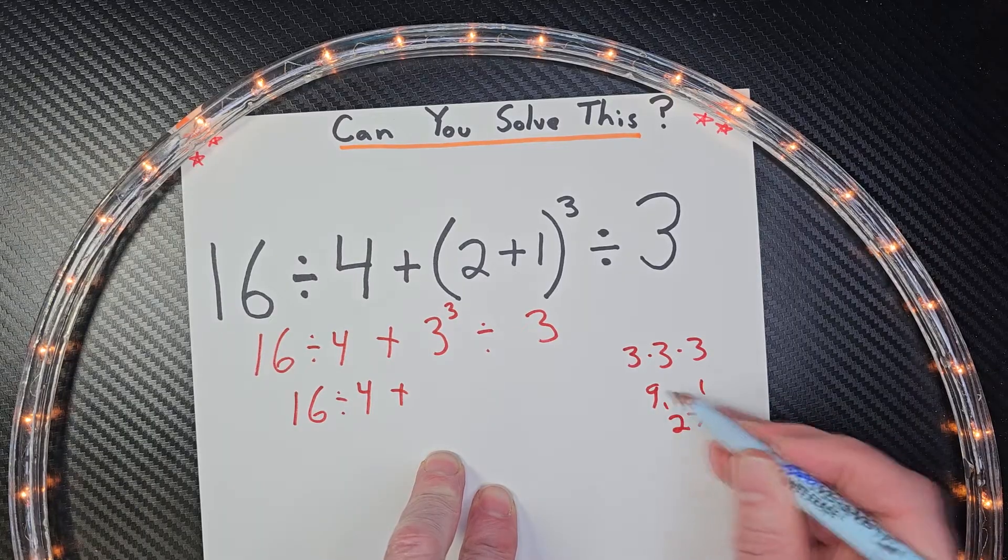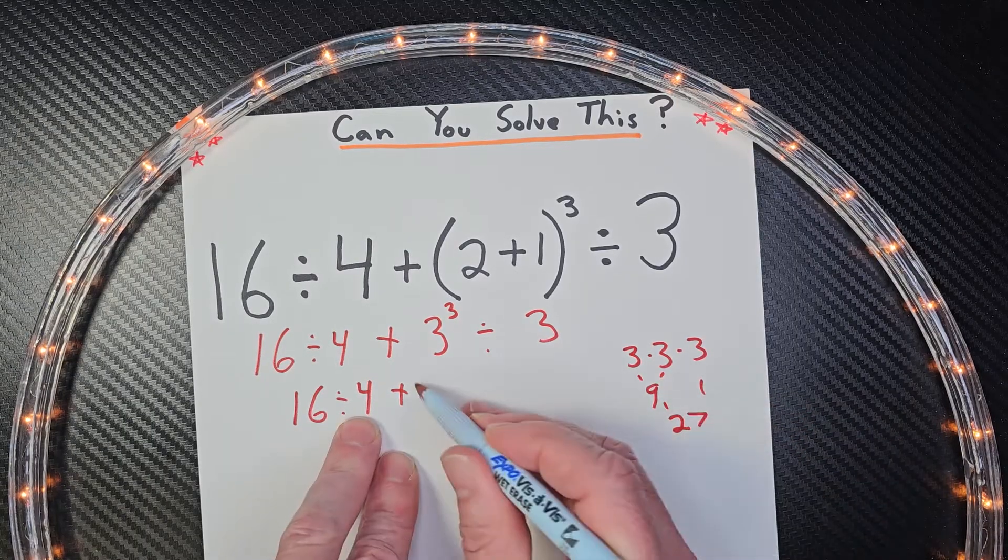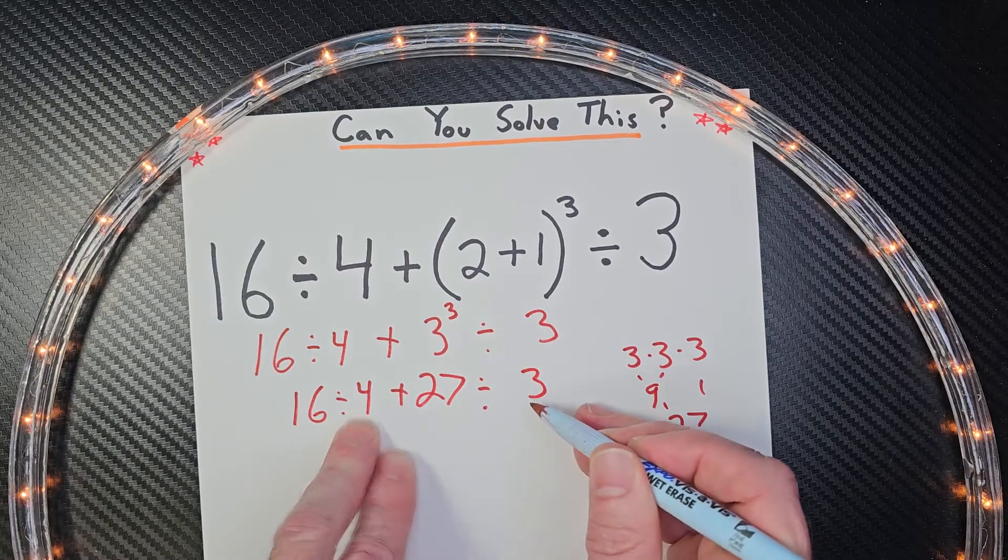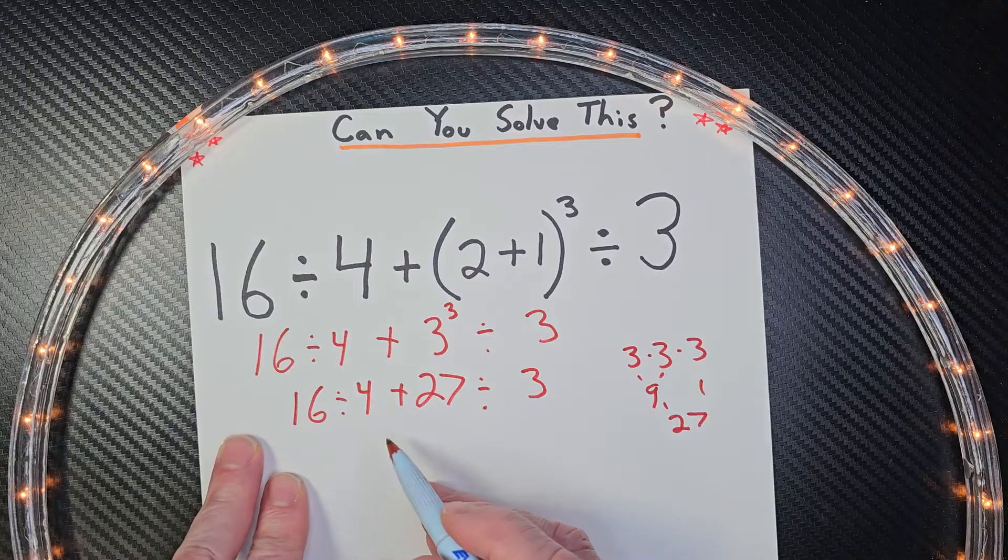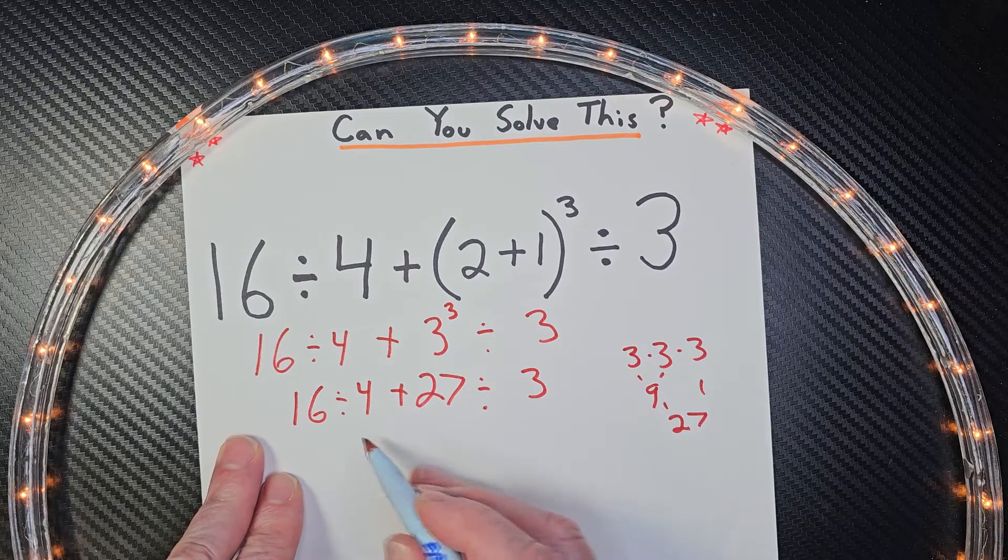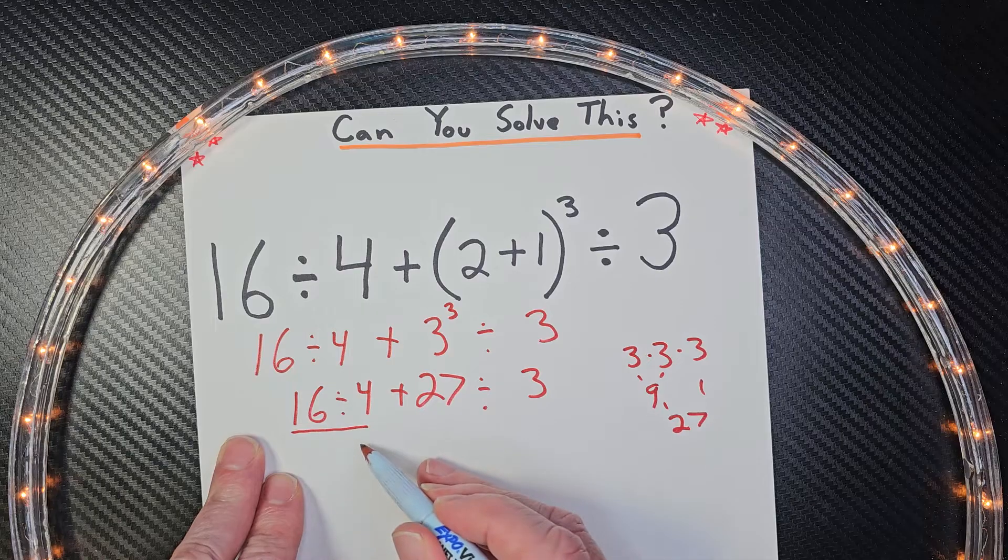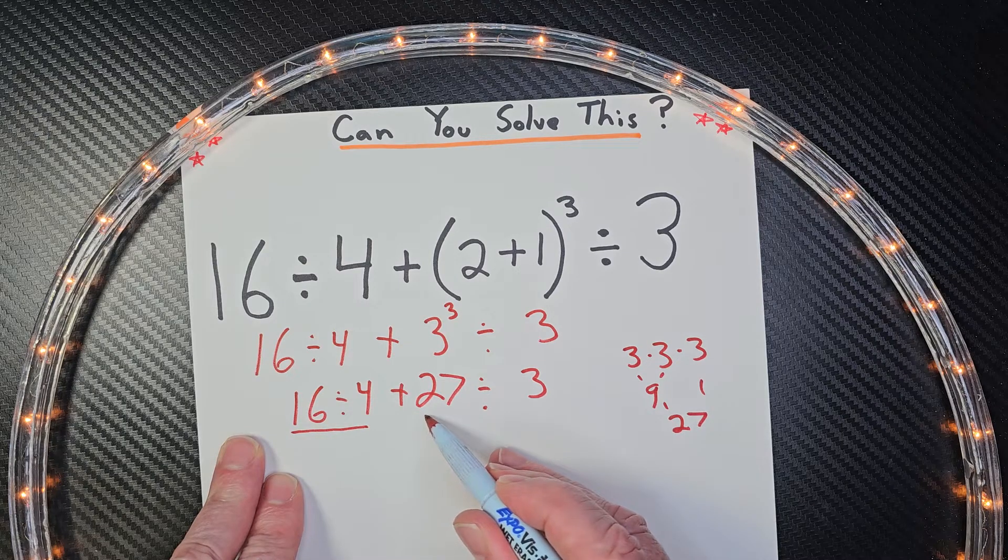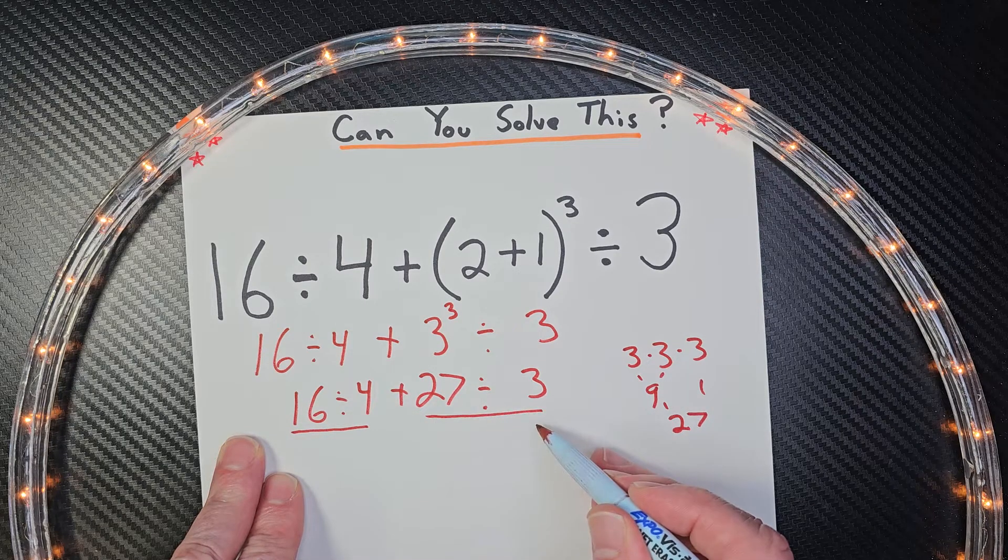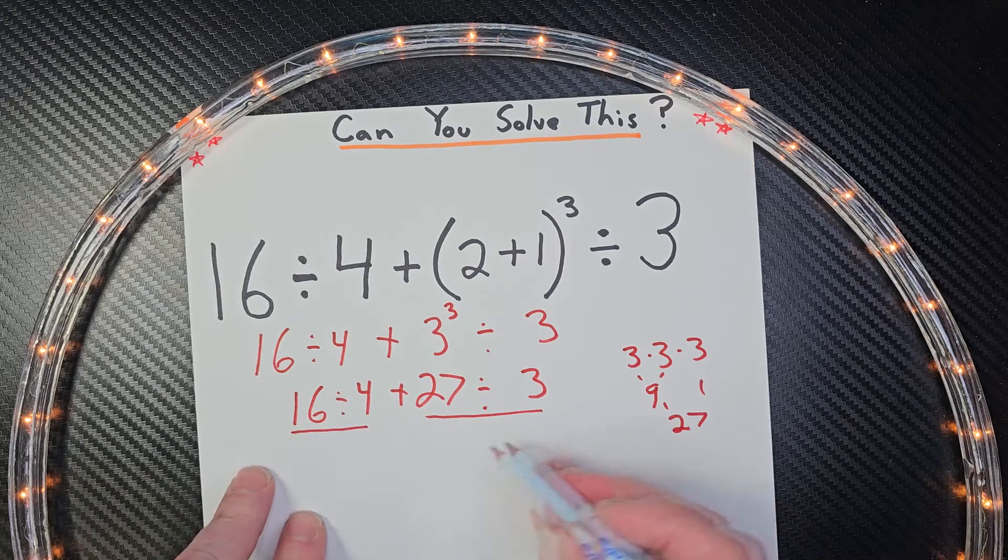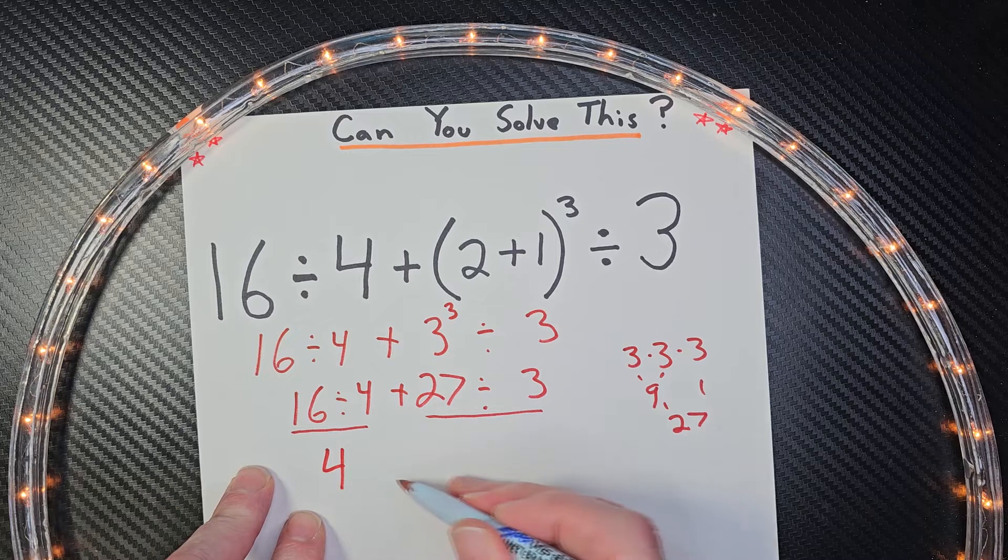All right, so plus 27 divided by 3. Now the next step, let's do division from left to right. I'm just going to underline 16 divided by 4 and then 27 divided by 3. So I'm going to do 16 divided by 4 first, and that would be 4.